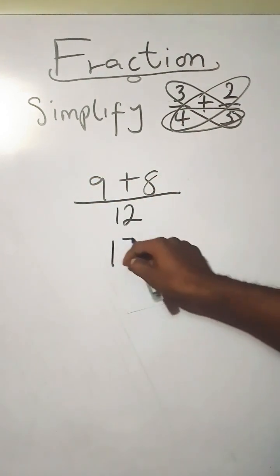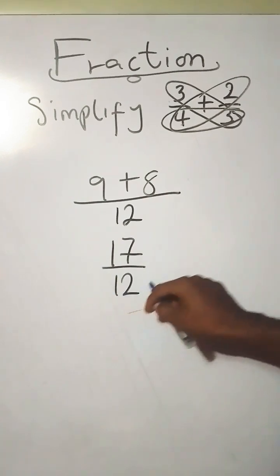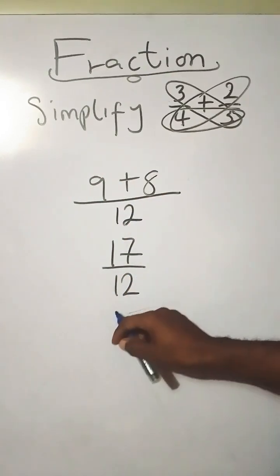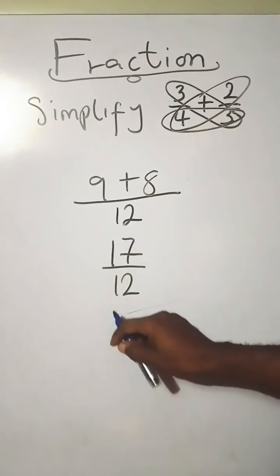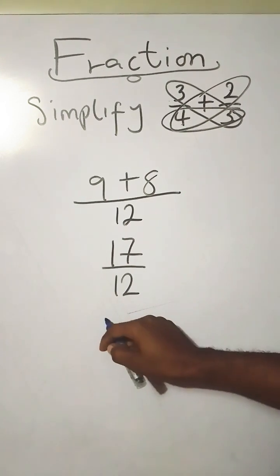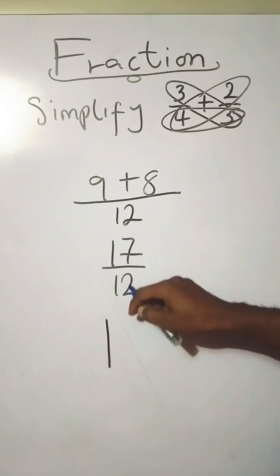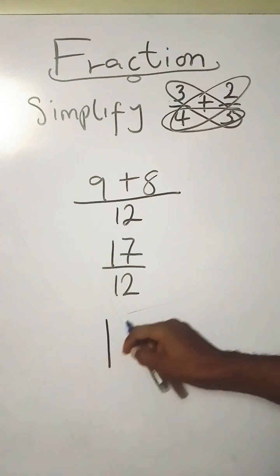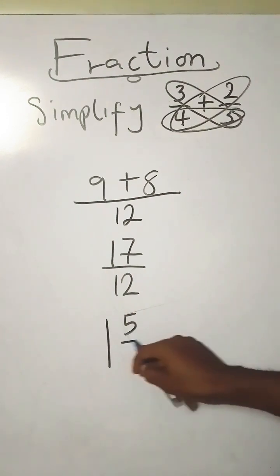Hence we have 17 over 12. 9 plus 8, and this is an improper fraction. So making it a mixed number gives you one whole number because 12 goes into 17 once, leaving you with 5 over 12.